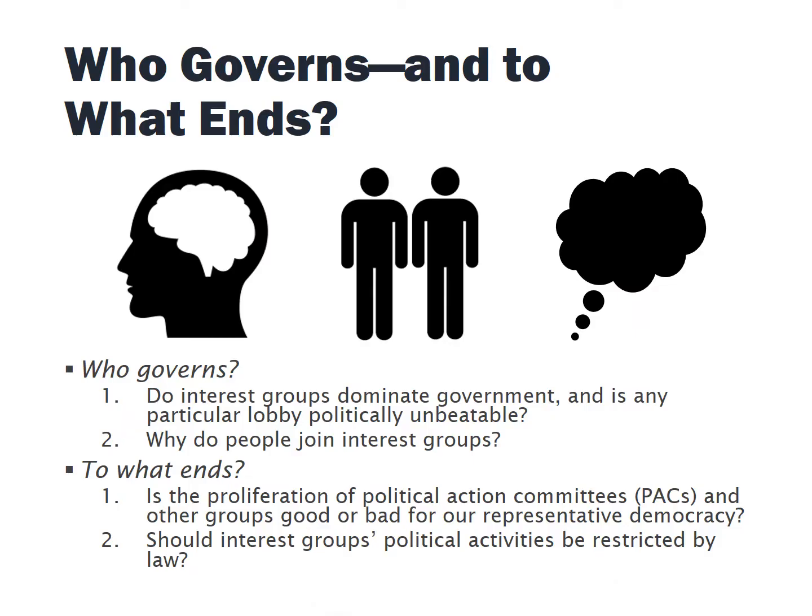You should have read through the chapter and taken a look at these four questions on your notes sheet. The first one asks: do interest groups dominate government, and is there any particular lobby who's politically unbeatable — meaning they're kind of in control, even if they're not part of the government? One I think of as a really powerful lobby would be the NRA, or the National Rifle Association. But by no means do they win all of their battles in Congress, even though they have a really powerful presence in American society.